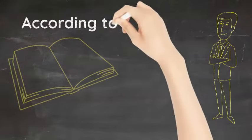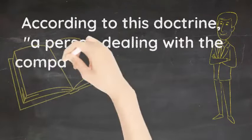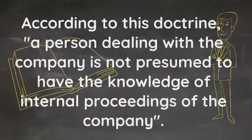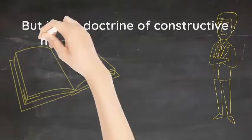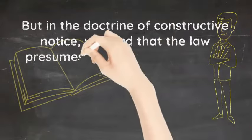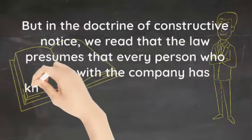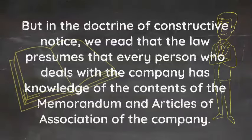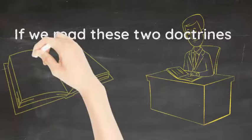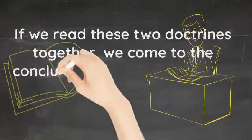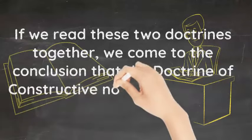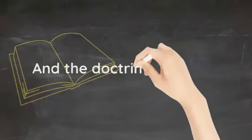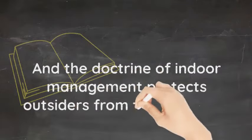According to this doctrine, a person dealing with the company is not presumed to have knowledge of the internal proceedings of the company. In the doctrine of constructive notice, we read that law presumes that every person who deals with the company has knowledge of the contents of the memorandum and articles of association. If we read these two doctrines together, we conclude that the doctrine of constructive notice protects the company from outsiders, and the doctrine of indoor management protects outsiders from the company.